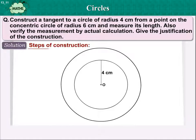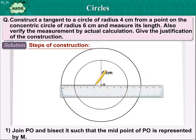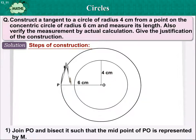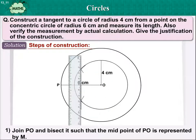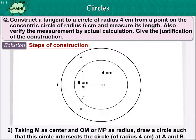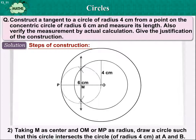Solution. Steps of construction. Number 1: Join PO and bisect it such that the midpoint of PO is represented by M. Number 2: Taking M as center, MO or MP as radius, draw a circle such that this circle intersects the circle of radius 4 cm at A and B.